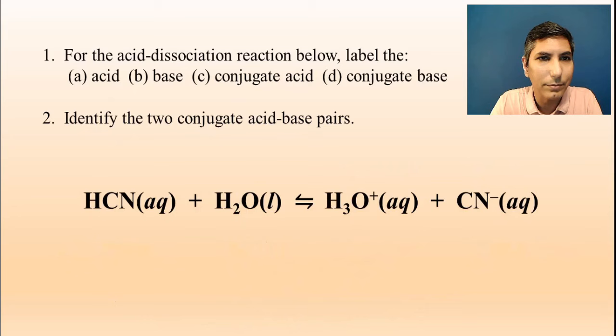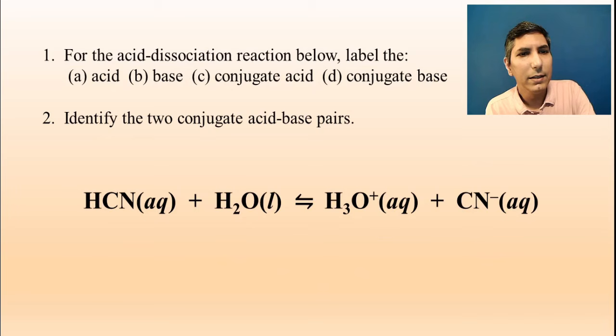So we have two conjugate acid-base pairs in every one of these acid-base reactions. So let's take a look at another reaction. And let's try to figure out some things about this. Let's take a look at the HCN here, this reaction. And let's first of all label the acid.